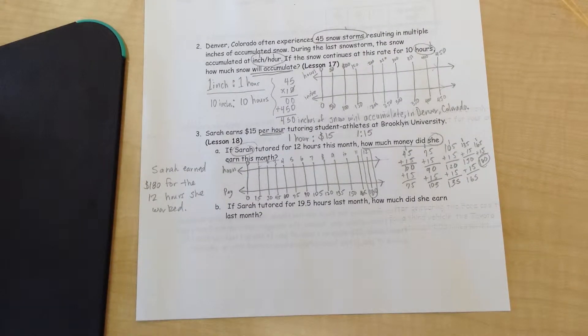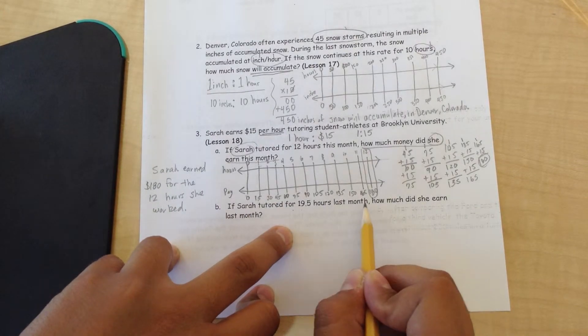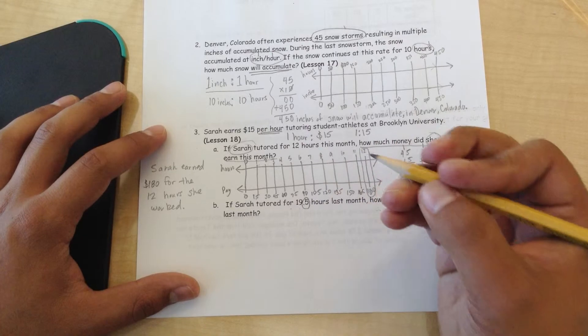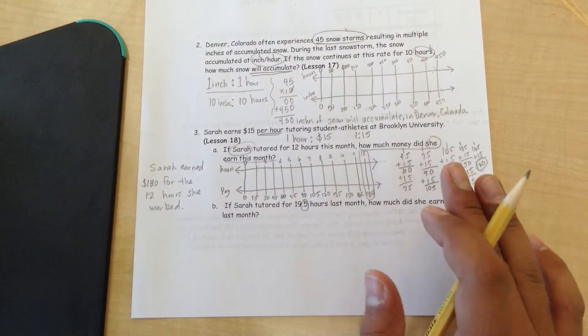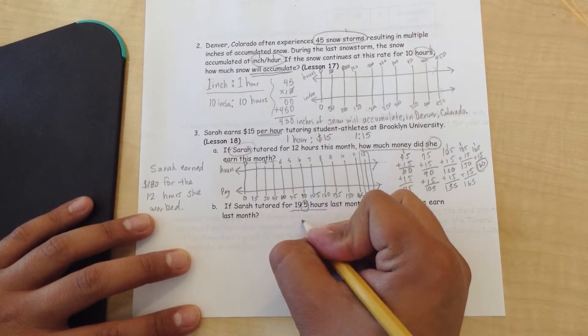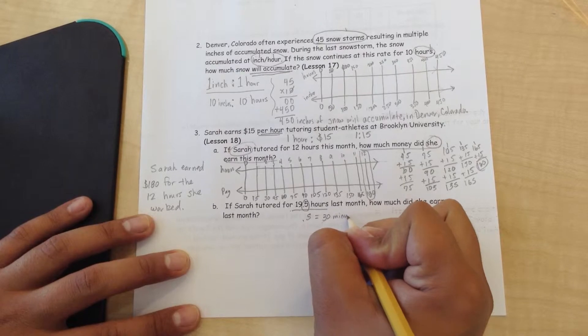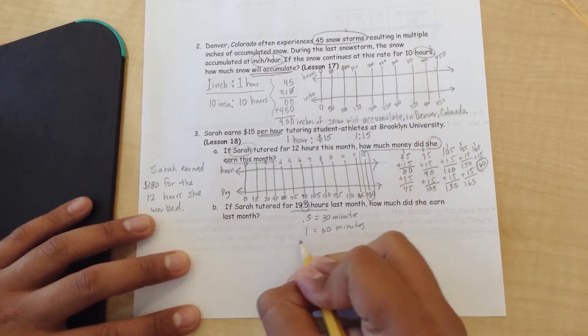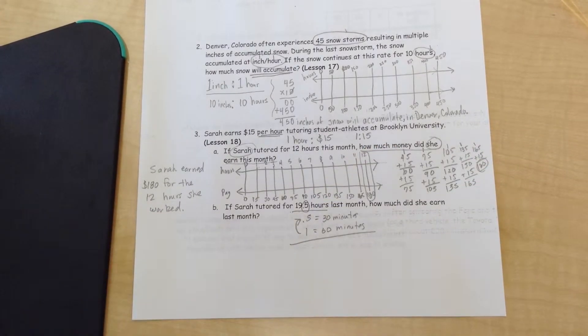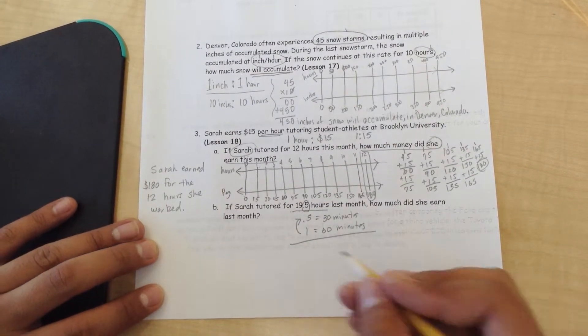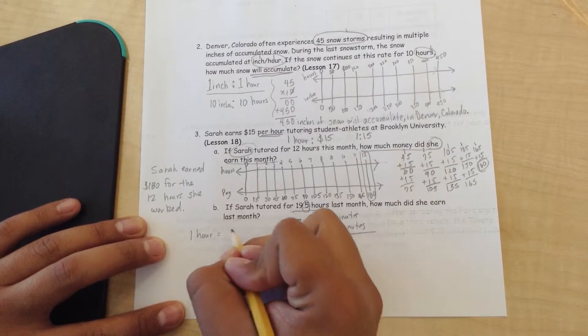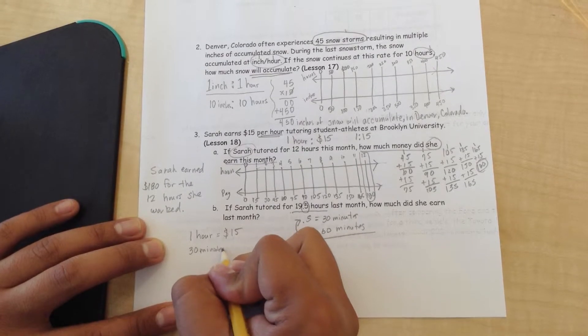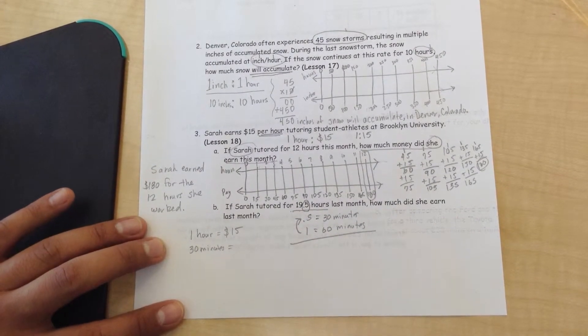All right. Now let's look at this part right here. If Sarah tutored for 19.5 hours last month, how much did she earn last month? What's going to be a little tricky here is the 0.5. That's basically half the time because we're looking at hours. Anytime you look at 0.5, it equals 30 minutes. Because 1 equals 60 minutes. What's half of 1? 0.5.